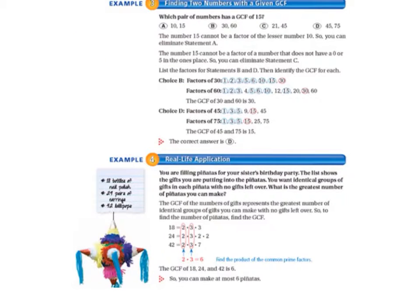Now let's turn the page, go to page 33, and let's look at example 3. Finding two numbers with a given GCF. Which pair of numbers has a GCF of 15?